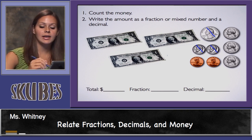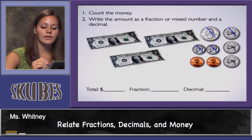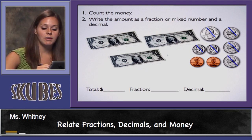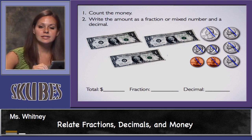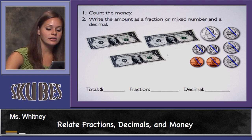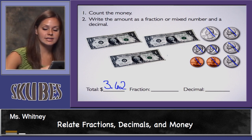Now I'll count my nickels: 50 cents, 55 cents, 60 cents. And I'll count my pennies: 61, 62. I have three dollars and 62 cents.